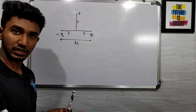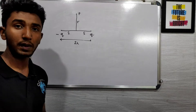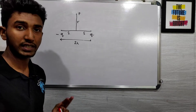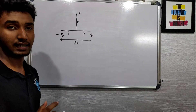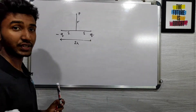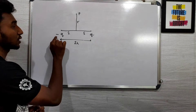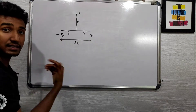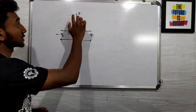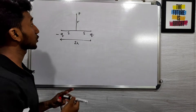We will use the superposition theory. We will understand the superposition theory. First, we will see A minus Q. First, AP — what do we do?